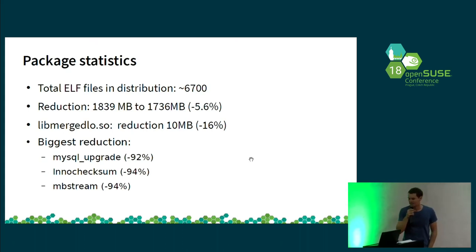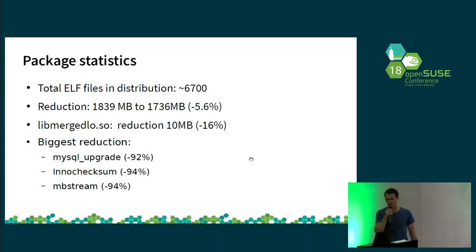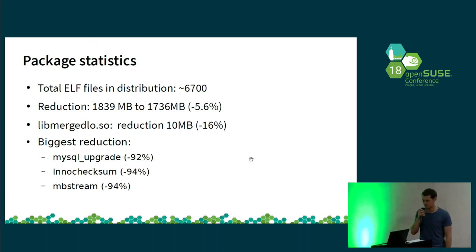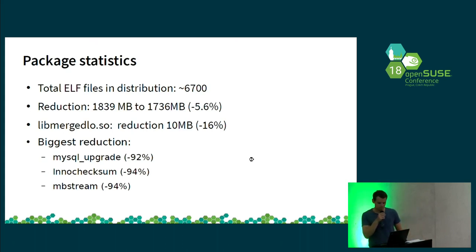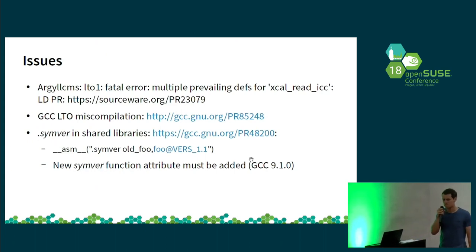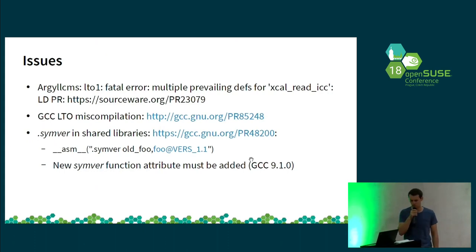We were able to get a distribution which is close to an LTO distribution. The next step was to boot the ISO image, which we got in KVM. I found all the ELF executables and shared libraries, which is close to 7,000. The total size of these files reduced from almost two gigs by about five percent. Note that this is also including packages built without LTO, so the real number should be better. We were able to boot it in OpenQA and it passed the tests, with only quite small fallout.